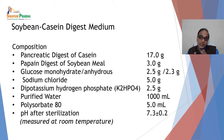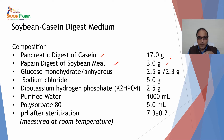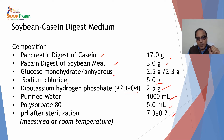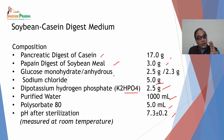Now for soybean casein digest medium, the composition is: pancreatic digest of casein 17g, peptic digest of soybean meal 3g, glucose monohydrate 2.5g, sodium chloride 5g, dipotassium hydrogen phosphate 2.5g, purified water QS 2000 ml, polysorbate 80 5 ml, and pH after sterilization 7.3 ± 0.2 measured at room temperature. Basic components: pancreatic digest of casein, peptic digest of soybean meal, glucose monohydrate, sodium chloride, dipotassium hydrogen phosphate, purified water, polysorbate 80, and pH 7.3 ± 0.2.